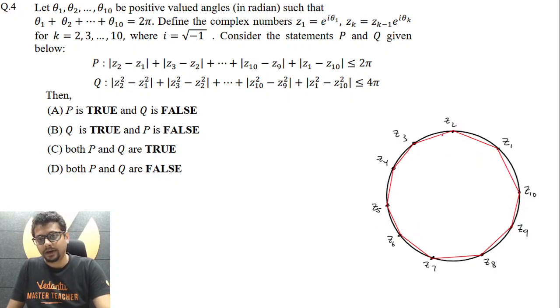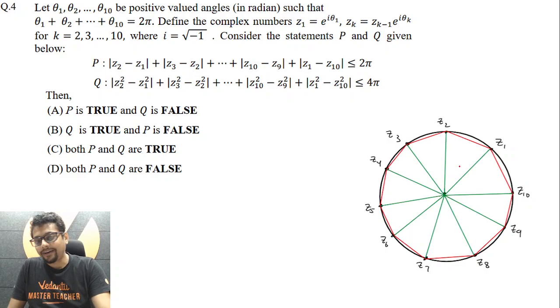So this, as I join these points, I get a decagon, not necessarily a regular decagon. Now let me join all these points with the center of the circle, happens to be the circumcircle of this decagon.